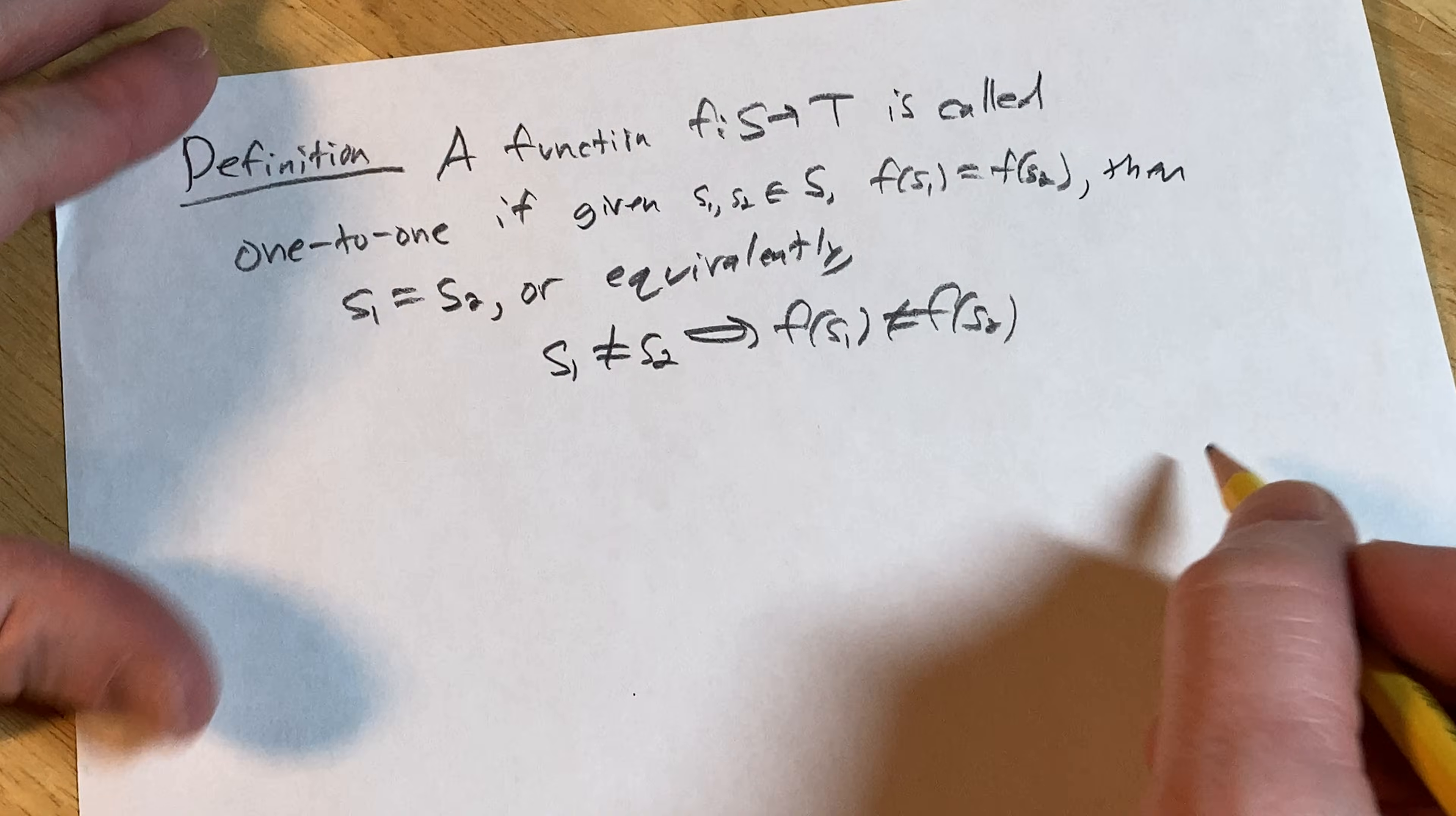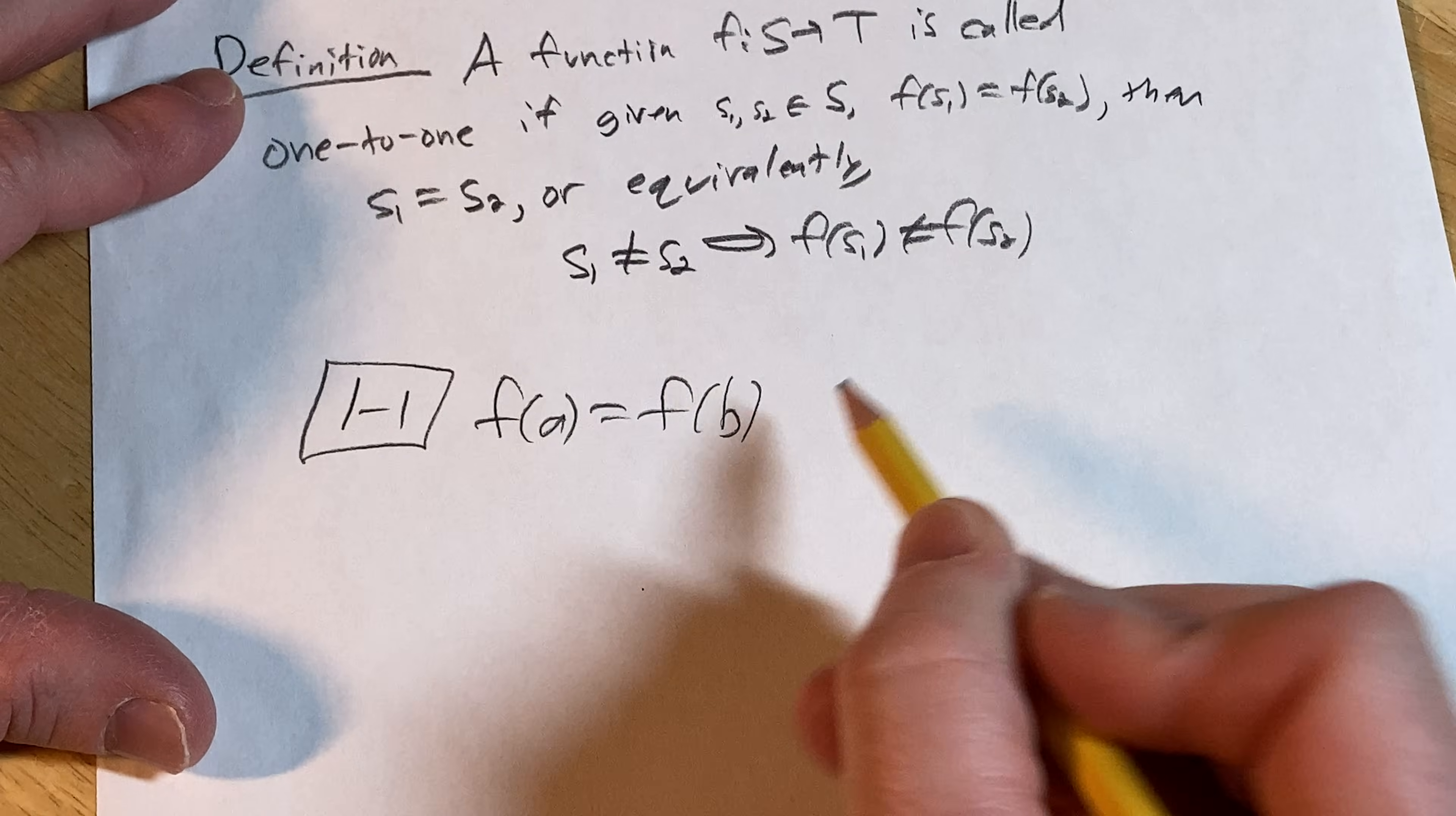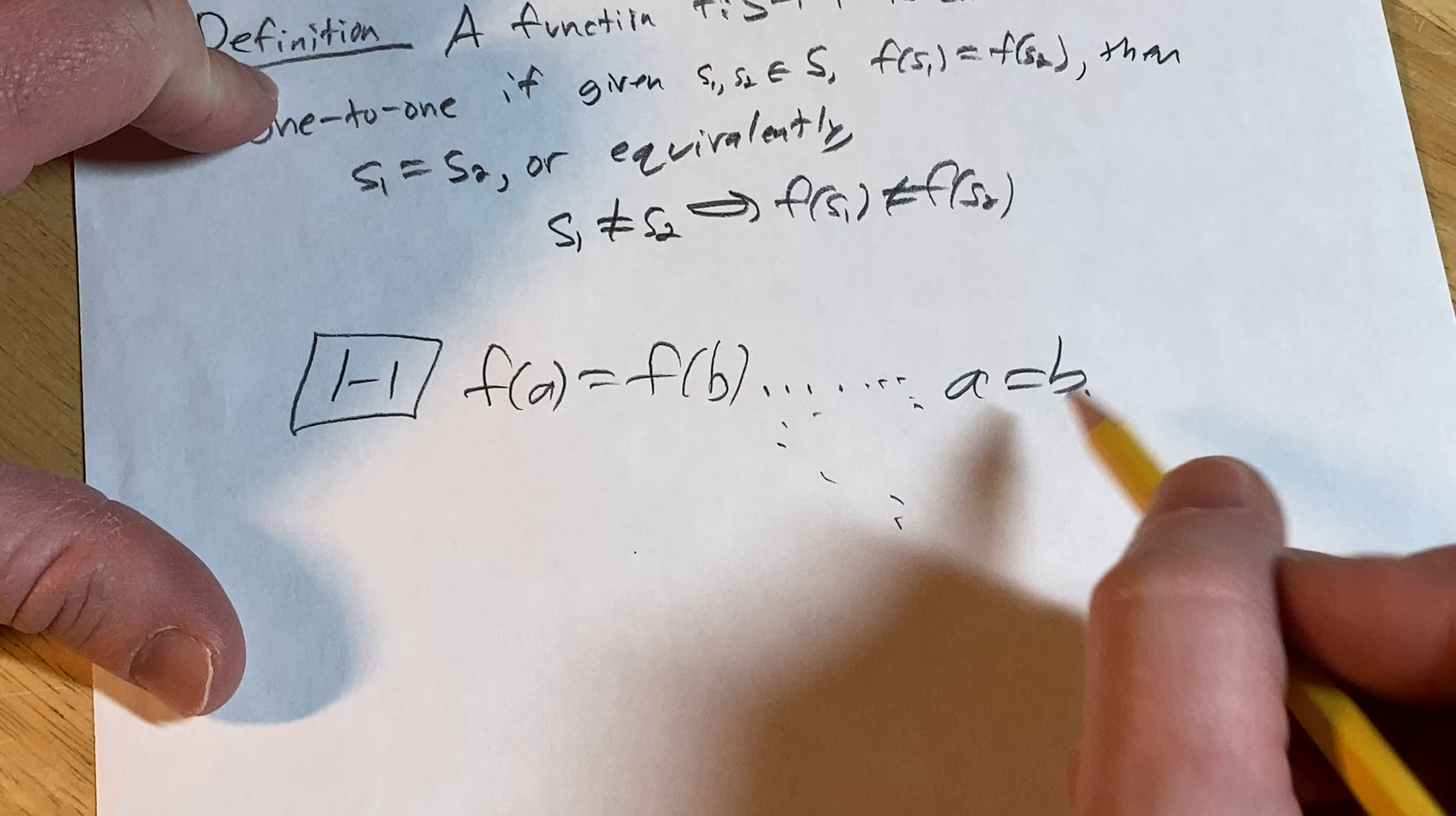Generally speaking, to show one-to-one, you start by assuming, say, f(a) = f(b), and then through a series of steps, you do some math, some work, and you show a = b. That's typically how it works.